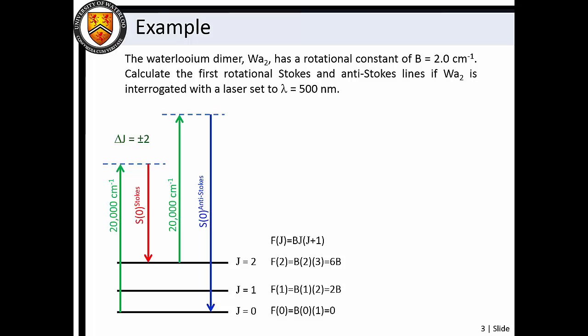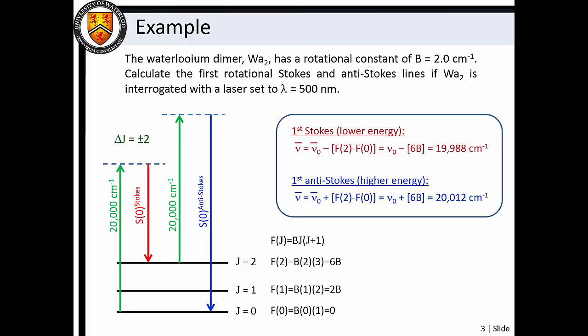Knowing that F(j) equals b times j times (j plus 1), we can calculate the rotational level energies. Since the energy gap between the j equals 0 and j equals 2 levels is equal to 6b, we find that the first rotational Stokes line occurs at 19,988 reciprocal centimeters, and the first anti-Stokes line at 20,012 reciprocal centimeters.